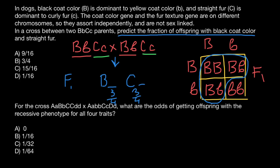Because these are two independent probabilities — these two genes reside on different chromosomes and assort independently — we multiply them: three quarters times three quarters equals nine sixteenths. So we expect nine out of 16 in the F1 generation to have black and straight fur. Hence, answer A.